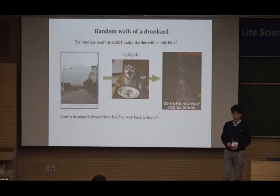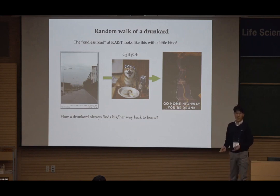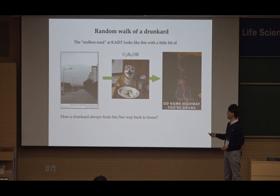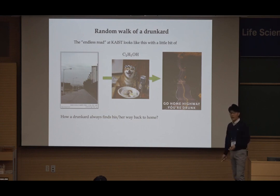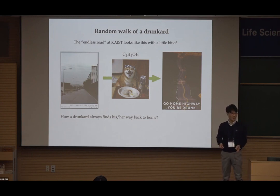This is a picture I show when explaining random walk in the classroom. This is a road in our campus called the endless road. It leads to a nearby marketplace with many bars and pubs. So after drinking a lot at night, you have to take this road to get back to your dormitory. But sometimes you drink too much — with too much C₂H₅OH, you become like this — and you feel the road is winding and never ends.